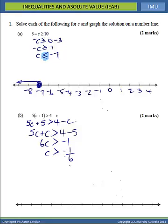Because we've divided by a positive number, the direction of the inequality does not change. This time we have greater than and not equal to, so when graphing this solution we're going to have an open circle. Using sixths as our scale, we want values that are greater than negative 1 sixth, so we have an open circle and go to the right. That is our solution: C is greater than negative 1 sixth.